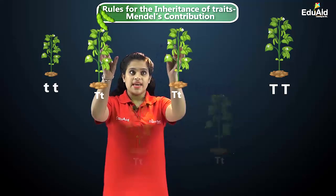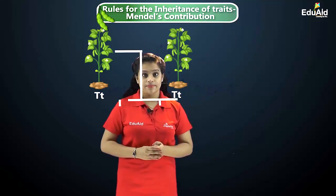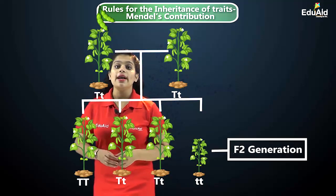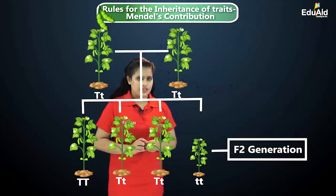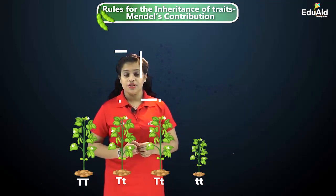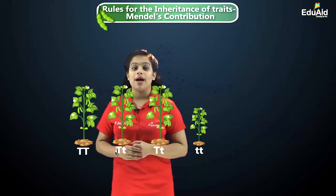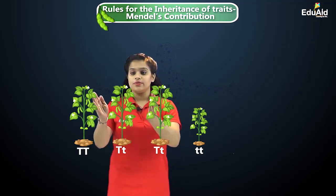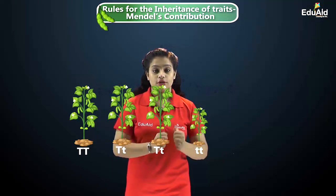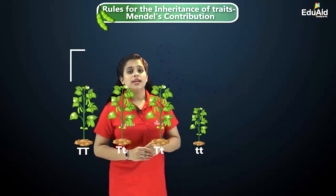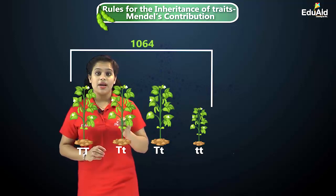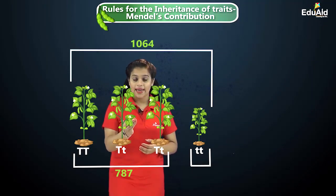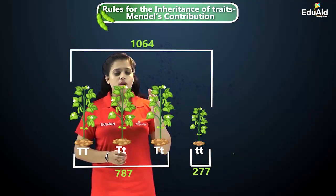The offspring produced were called the second filial generation, or F2 generation. Mendel observed that in the F2 generation, both tall and short plants showed up. He noticed that three-fourths of the plants were tall and one-fourth were short. Out of a total of 1064 plants in the F2 generation, 787 were tall and 277 were short.